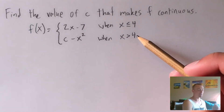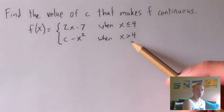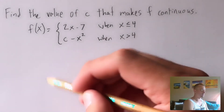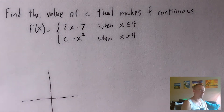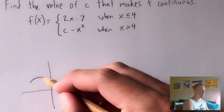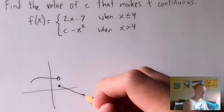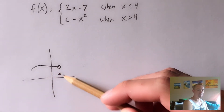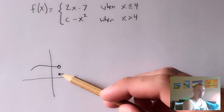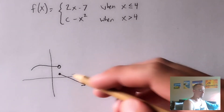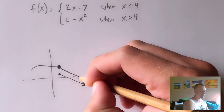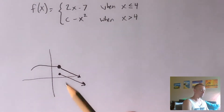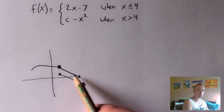Now we need to make sure the piecewise function as a whole is continuous at x equals 4, where we switch from one function to the other. Imagine graphing two functions — if the piecewise function has a jump from one piece to the other, it's not continuous. But if we move one piece up to fill in the gap, we get a continuous piecewise function. That's what we're trying to do: pick c so that both pieces line up at x equals 4.